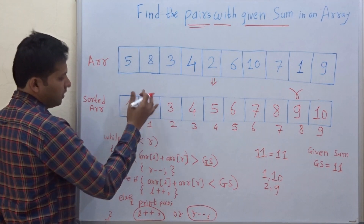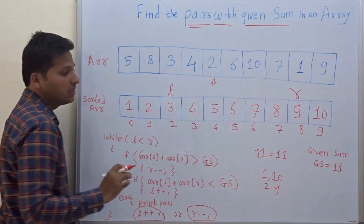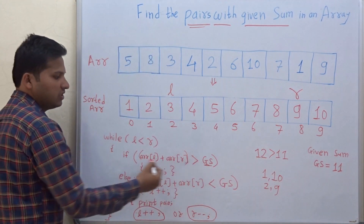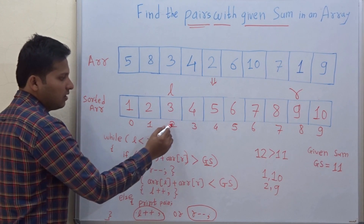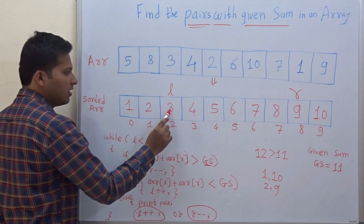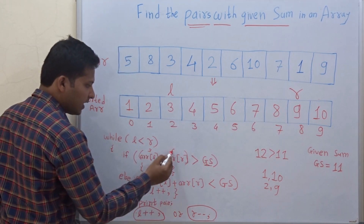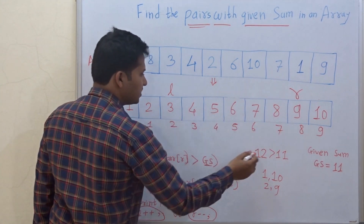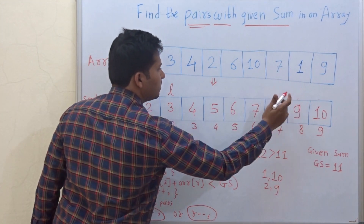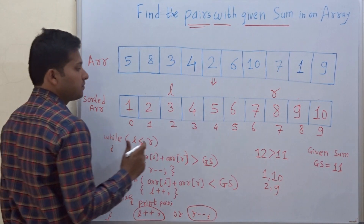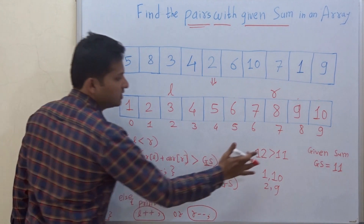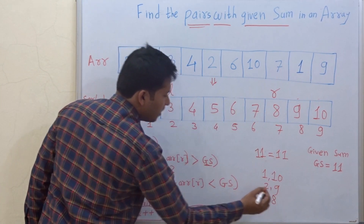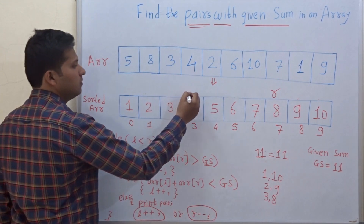After incrementing L, we check 3 plus 9, which is 12. Since 12 is greater than 11, R minus minus — we decrement R. L is at index 2 (element 3) and R is now at index 7 (element 8). So 3 plus 8 is 11, which is equal to the given sum, so we print the pair 3, 8, and then increment L.